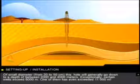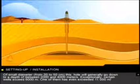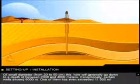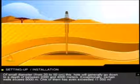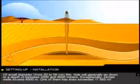The drillers then make a hole of a small diameter, from 20 to 50 centimeters. This hole will generally go down to a depth of between 2,000 and 4,000 meters.